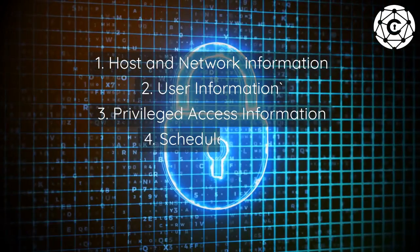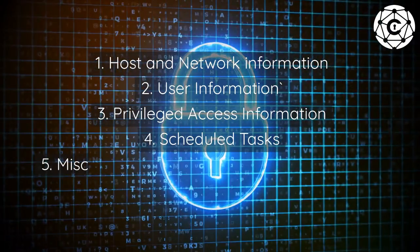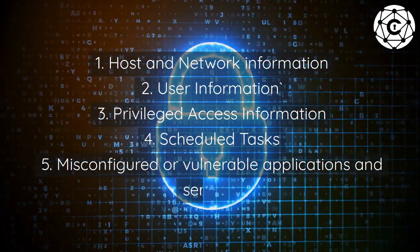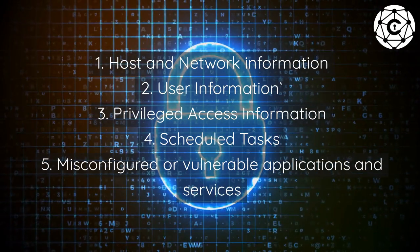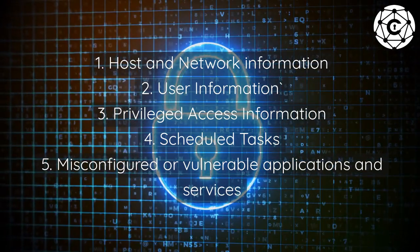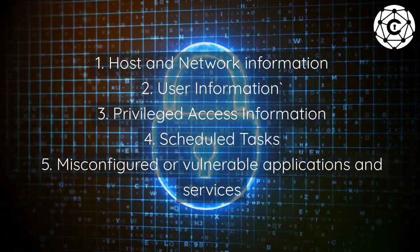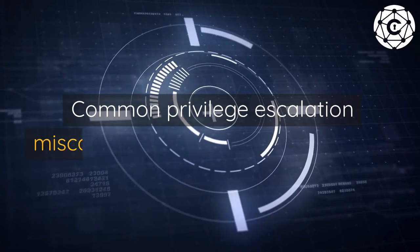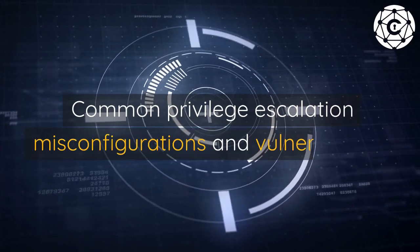Privilege escalation enumeration checklist: one, host and network information; two, user information; three, privileged access information; four, scheduled tasks; five, misconfigured or vulnerable applications and services.